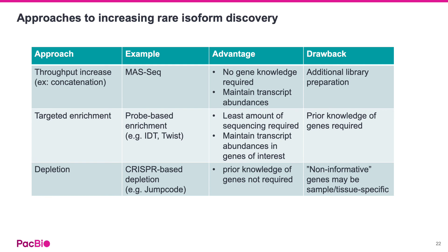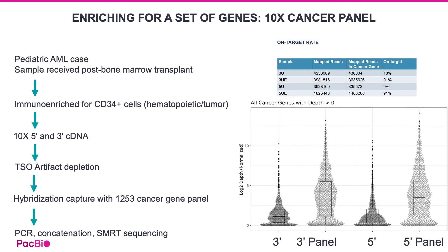In contrast, depletion-based methods, which you will hear about later today, only require knowledge of uninformative genes, such as mitochondrial and ribosomal genes, that are commonly discarded in transcriptome data analysis. In this pilot study, PacBio and collaborators applied a cancer panel to a pediatric AML sample using both the 10x 3-prime and 5-prime kits. After panel enrichment, both libraries showed on-target rates increasing from 10% before enrichment to over 90% after enrichment.